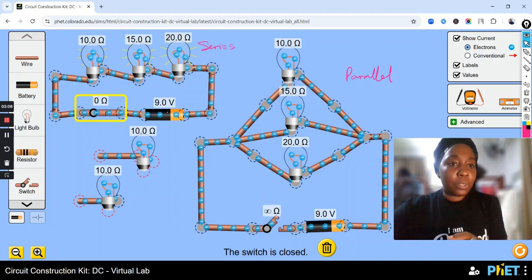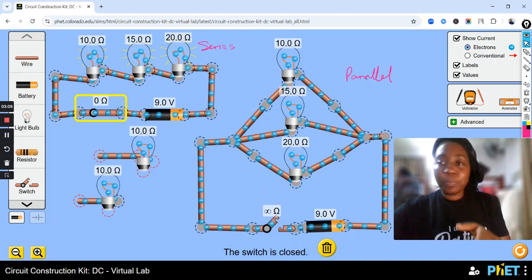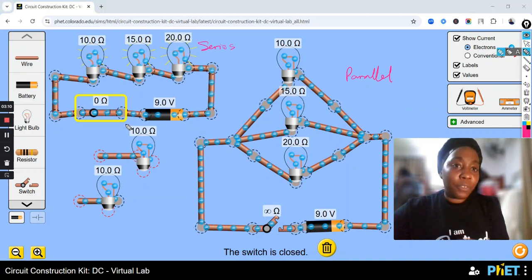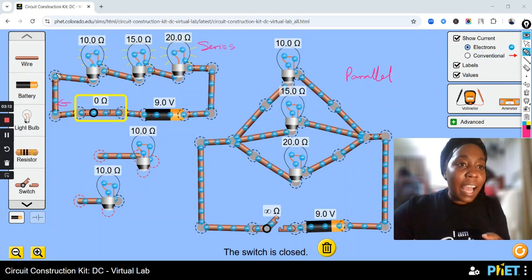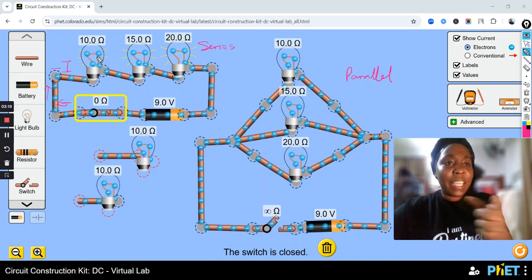Now, in this circuit, as this flows, you can see that we have one way for the current to flow. So we have I. I is just one way. One way it's flowing.